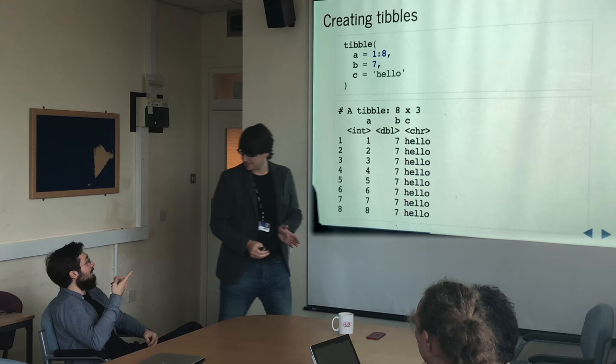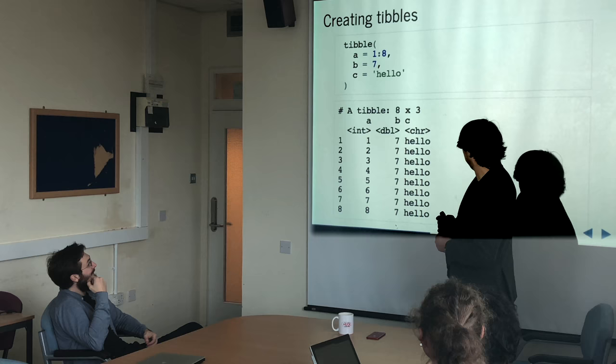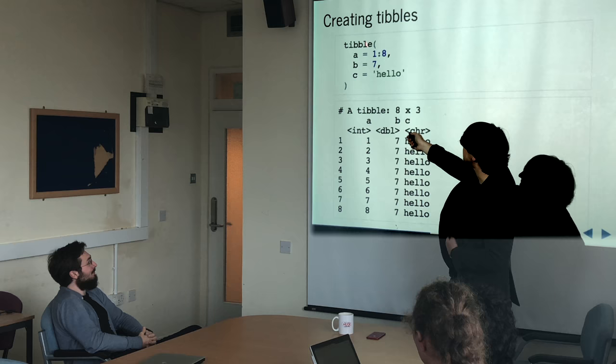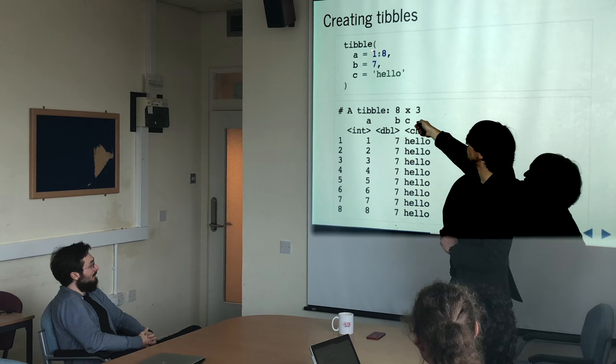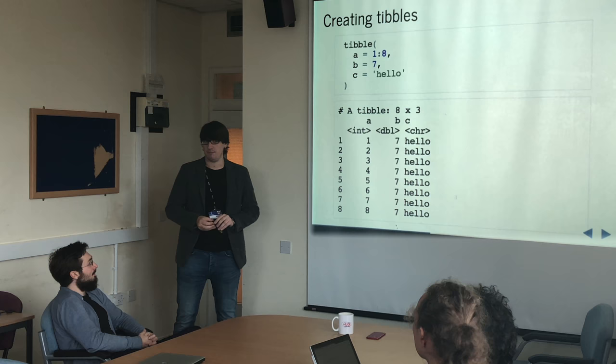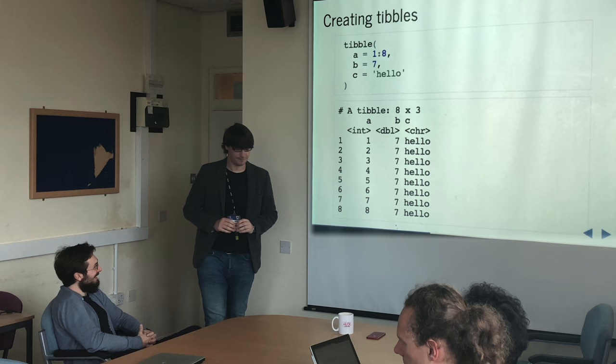Is there a reason that 7 is a double and the 1 to 8 are integers? I think it defaults to double, but because the colon operator steps 1 through 8 in integers, that's why those are integers. So this will have returned integers; the plain number 7 will return a double. I think you can force it to be an integer, but it defaults to double unless it has a reason to be an integer.